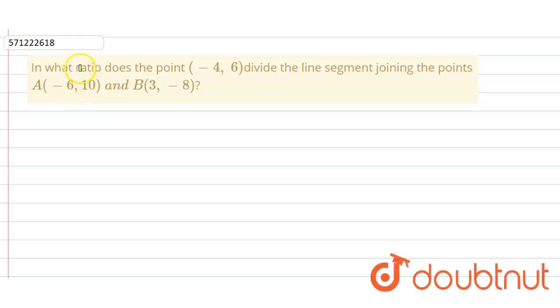In the given question we have to find the ratio in which the point (-4, 6) divides the line segment joining the point A whose coordinates are (-6, 10) and B which is (3, -8). So here we use the section formula.